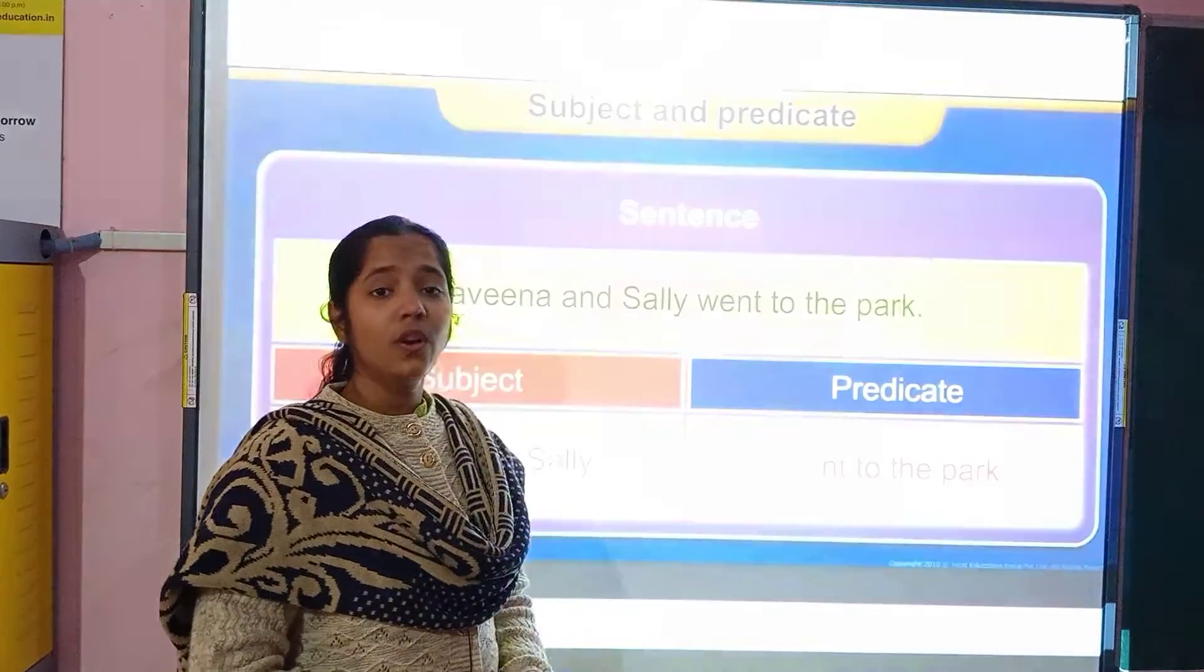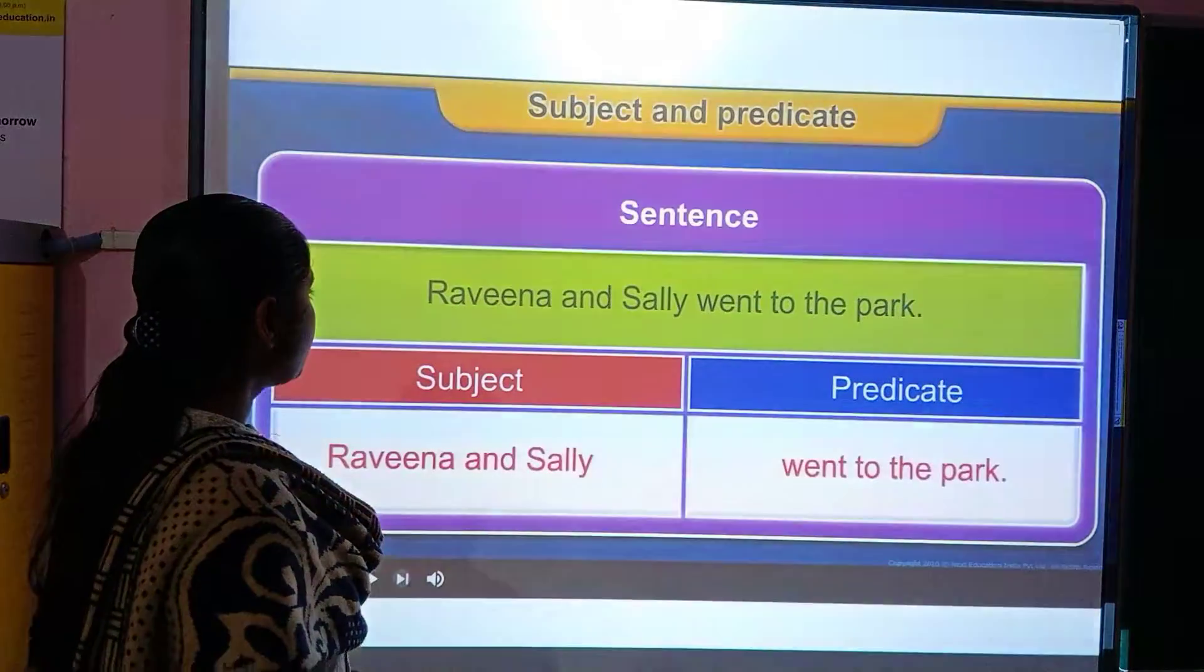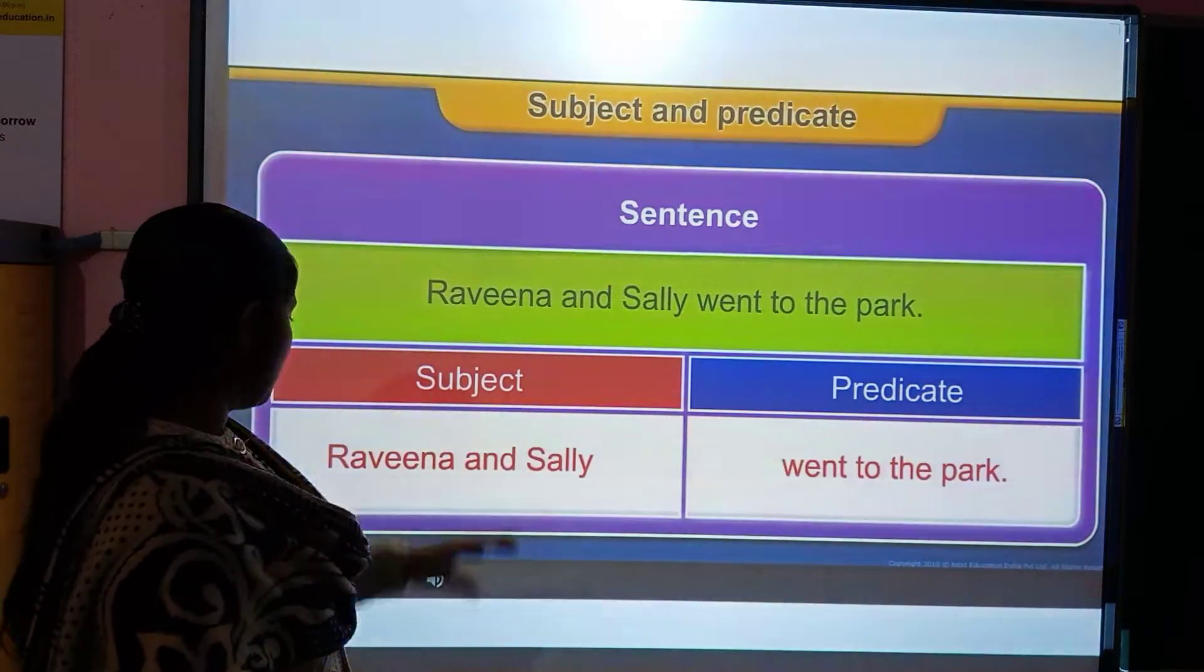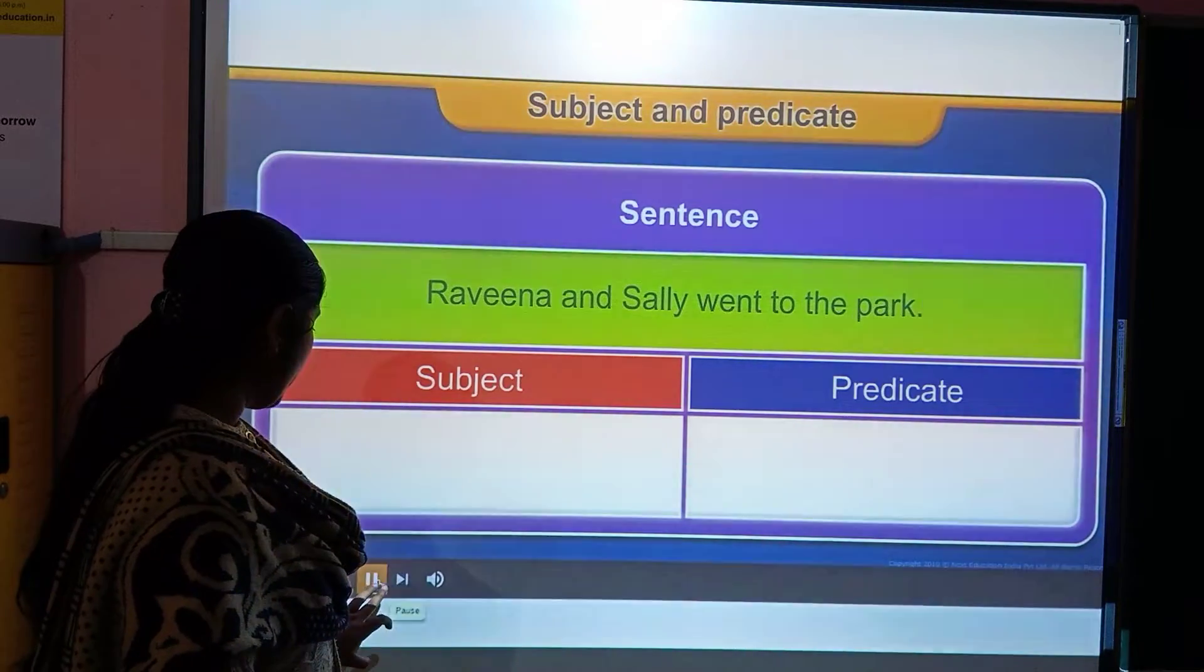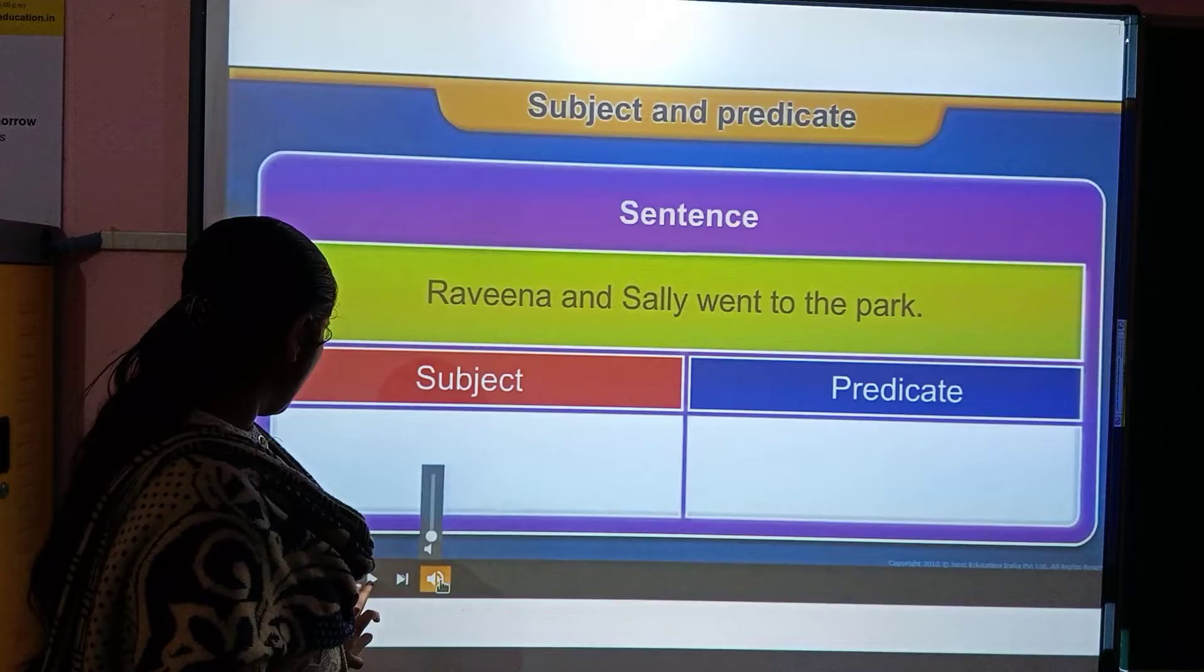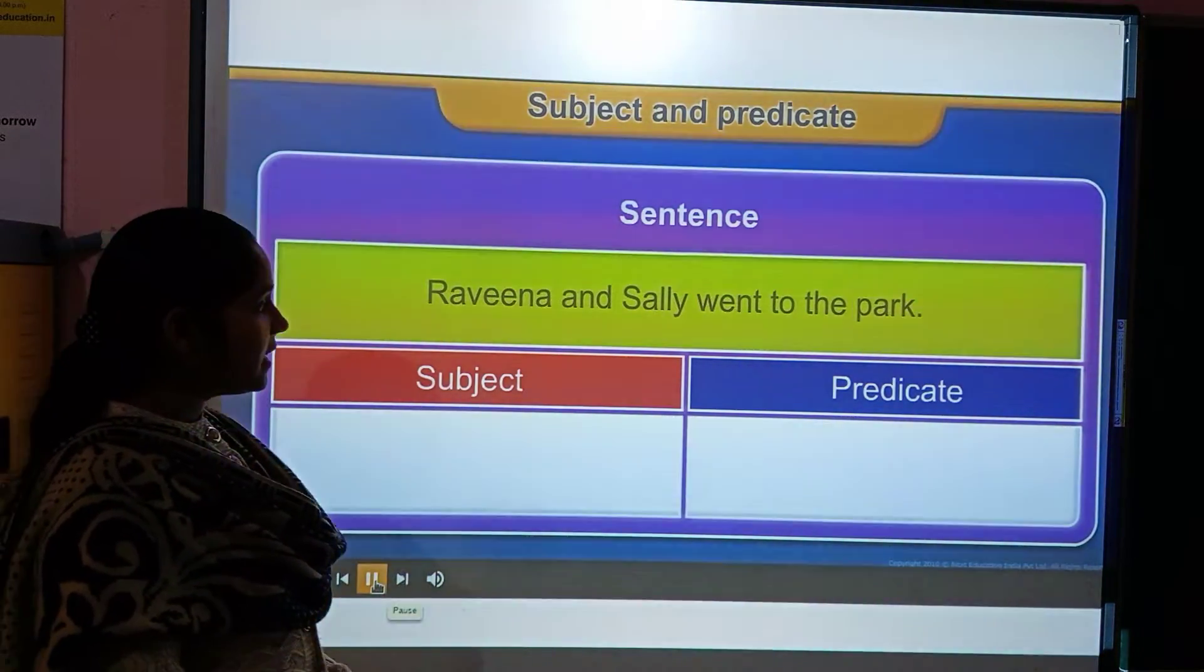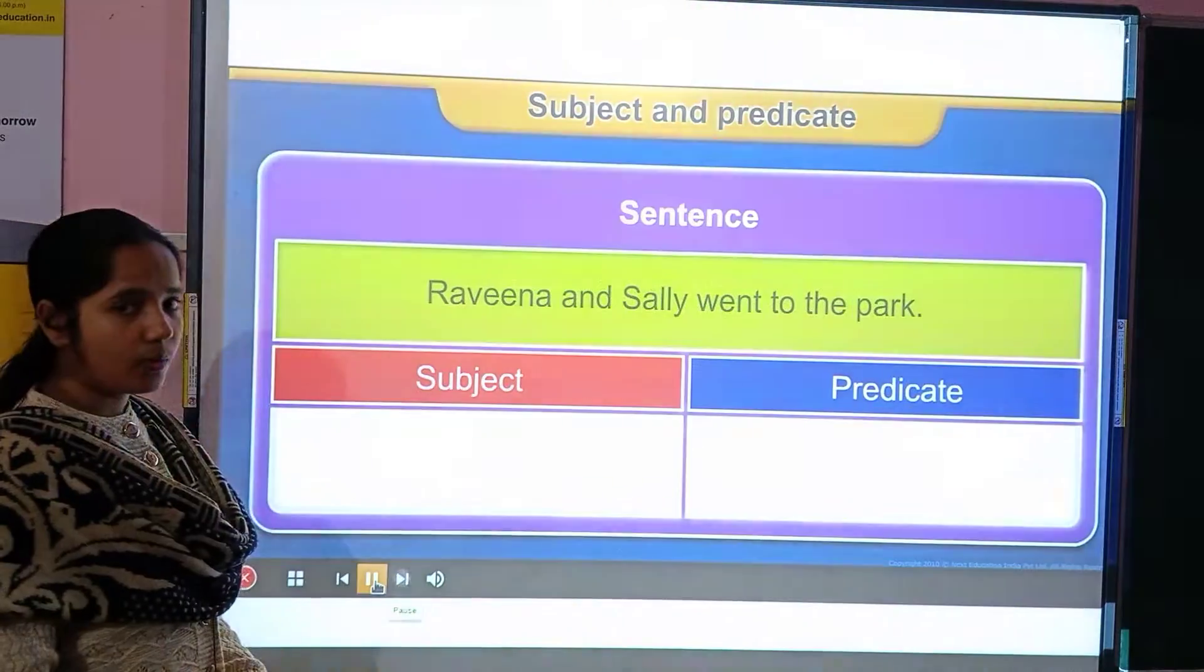So now we are going to revise some of the activities. So what are the subject and predicate? And just a second. Now, subject and predicate. The sentence: Raveena and Sally went to the park.